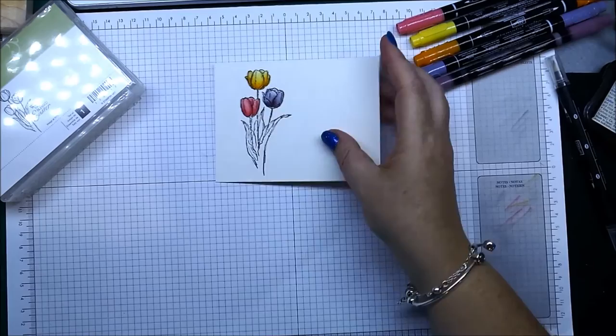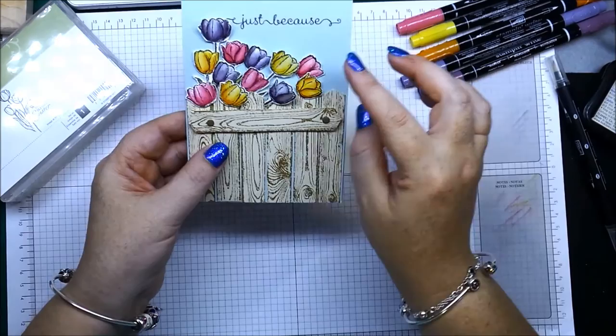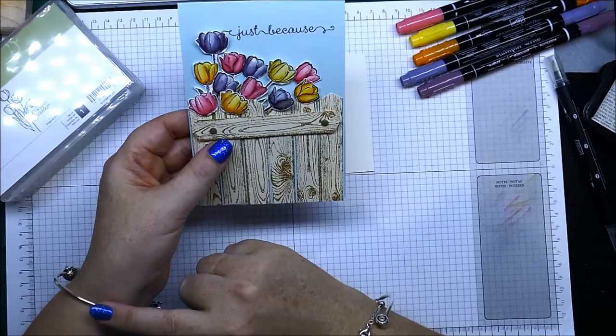This is one that I made yesterday. The fence is made out of the Hardwood stamp which is in the occasions catalog. And these are just—I think I stamped two full tulips and then another two for all your little petals and stuff like that.